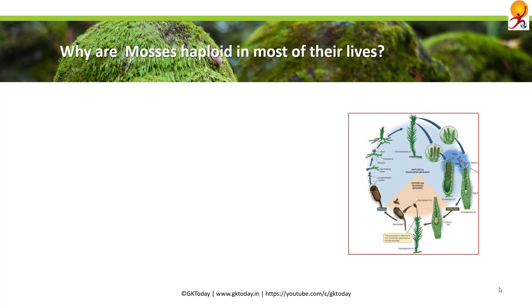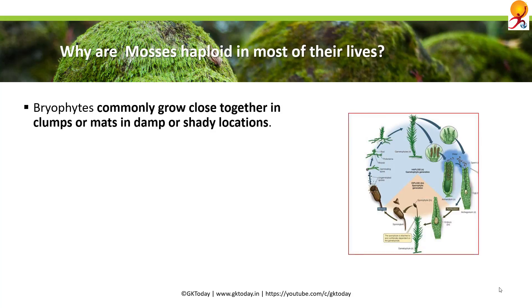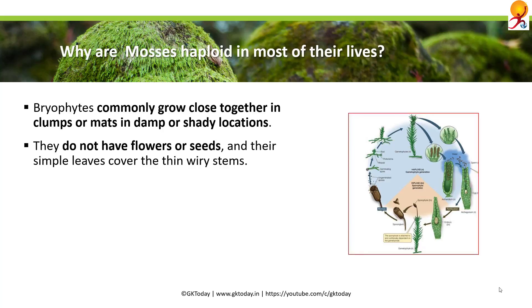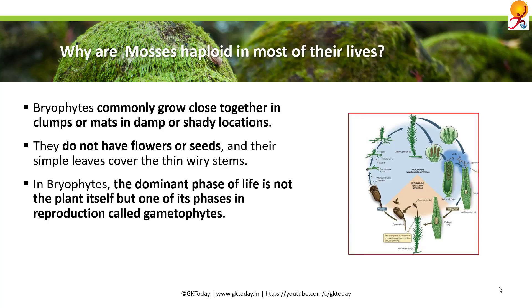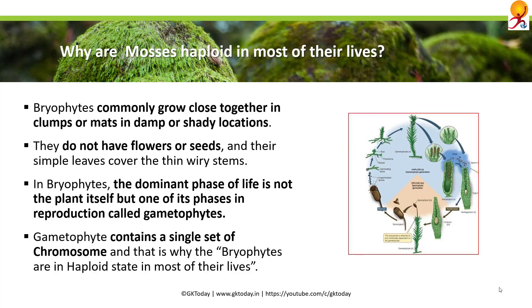Why are mosses haploid in most of their lives? Bryophytes commonly grow close together in clumps or mats in damp or shady locations. They do not have flowers or seeds, and their simple leaves cover thin, wiry stems. In bryophytes, the dominant phase of life is not the plant itself but the gametophyte phase of reproduction. Gametophytes contain a single set of chromosomes, which is why they are haploid — and this is why bryophytes are in a haploid state for most of their lives.